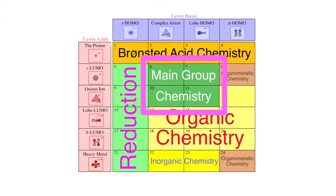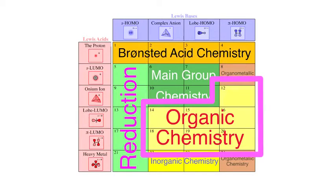In the middle of the interaction matrix, type 6, 7, 10, and 11, we see main group chemistry. Organic chemistry occupies a large swathe of the matrix: type 12, 14, 15, 16, 18, 19, and 20.